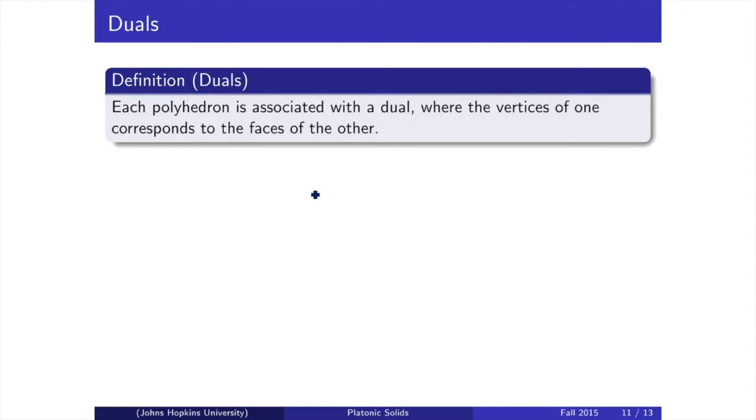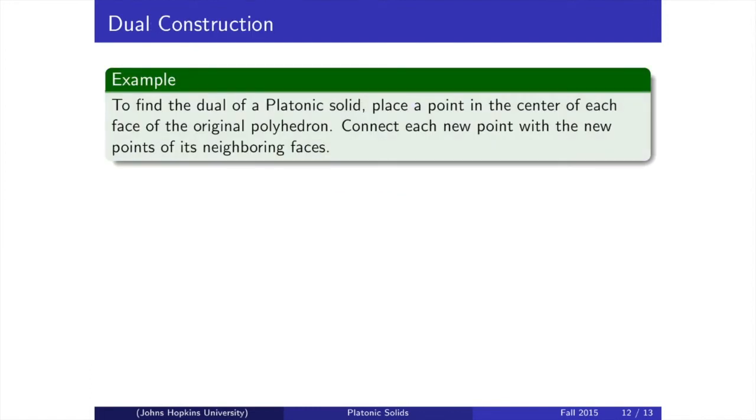The Schläfli symbols imply something very interesting about the platonic solids. Here, we look at their duals. The dual is basically when we swap the faces for vertices and the vertices for faces. There are many ways to construct the dual of a platonic solid. Take, for example, the cube.